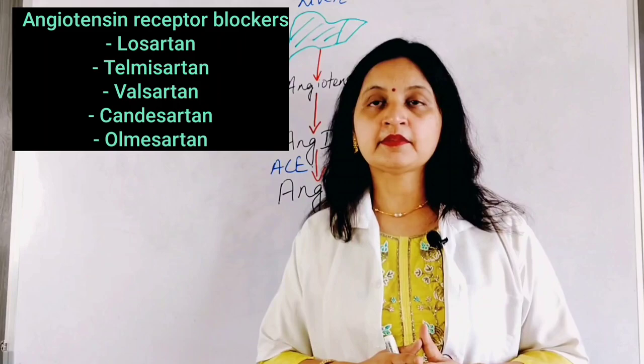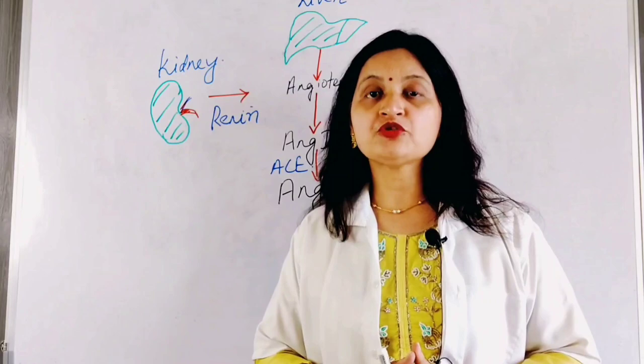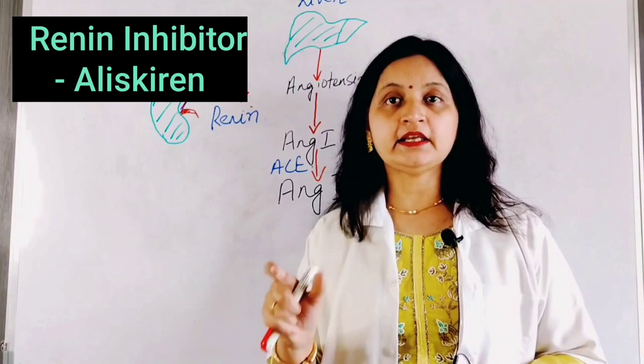There is also a drug that inhibits renin, which decreases the formation of angiotensin-2 and helps in lowering blood pressure. That drug is aliskiren.